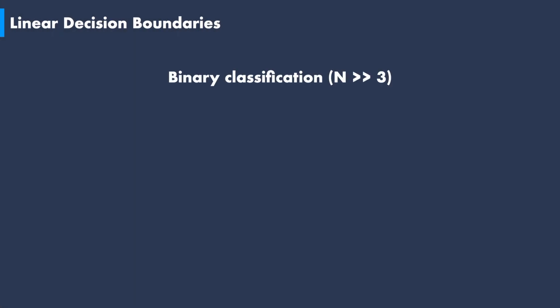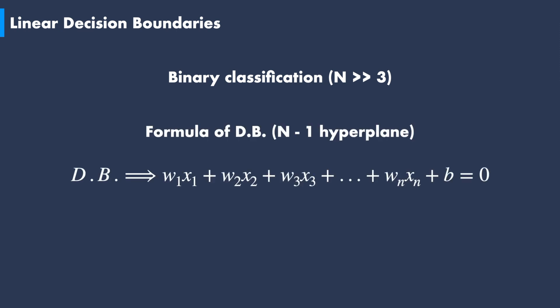We can now generalize for a number n of input features. In this case, a binary classification problem will have a decision boundary that is given by the equation of a hyperplane. This hyperplane has a dimension n minus one.